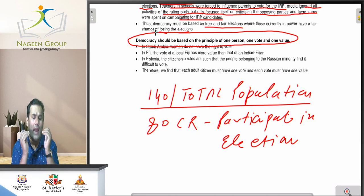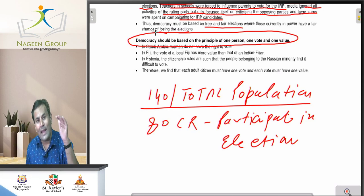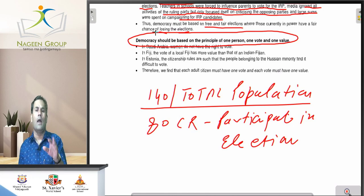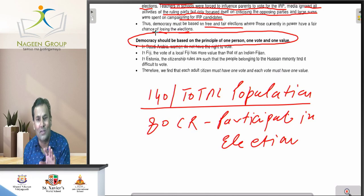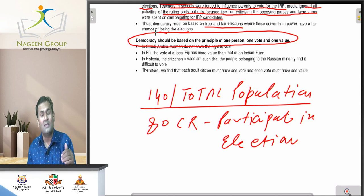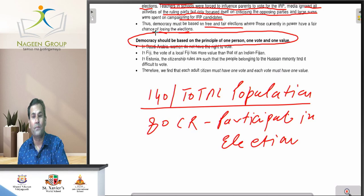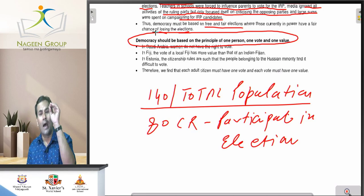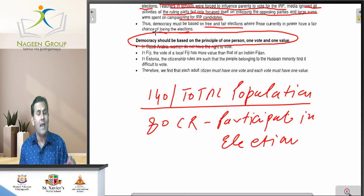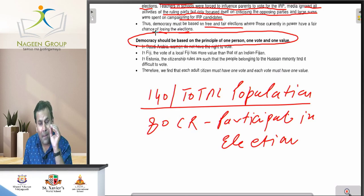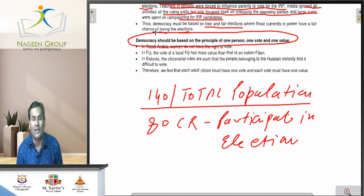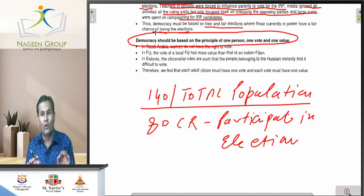This is the actual meaning of democracy. If in any country the value of votes are different, we can say that is not the true spirit of democracy. It is very important — democracy is based on one person, one vote, one value.